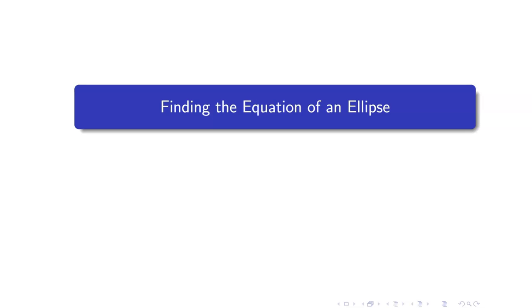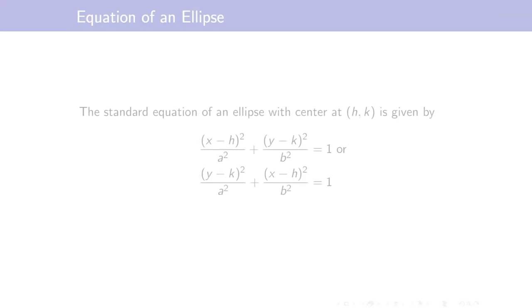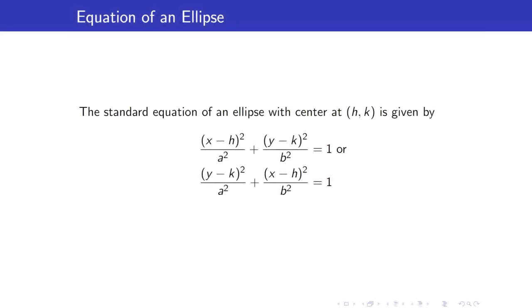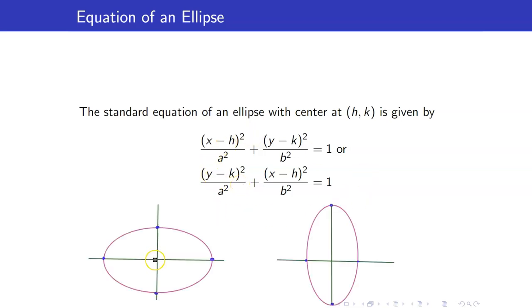In this lesson, we will find the equation of an ellipse given certain conditions. Let us recall first the standard equation of an ellipse with center at (h, k), given by the following formula. Let us also recall the graph of an ellipse.